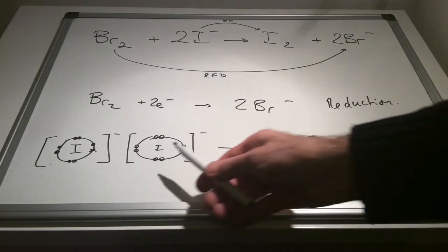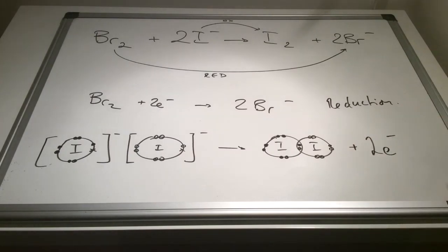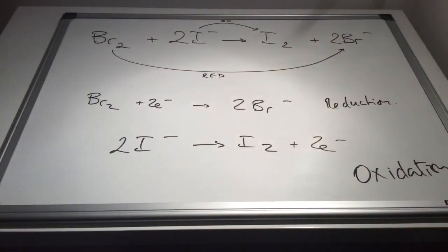And you can see that we've lost electrons. There they are there. So this is the oxidation process. And there's how the half equation would be written.